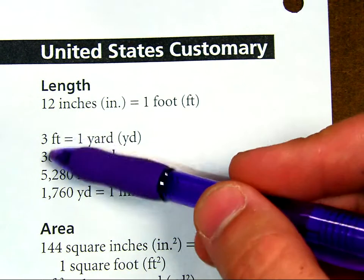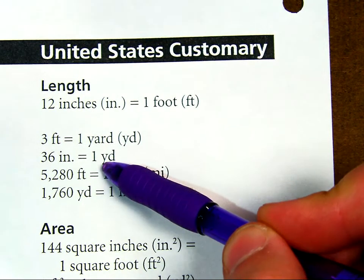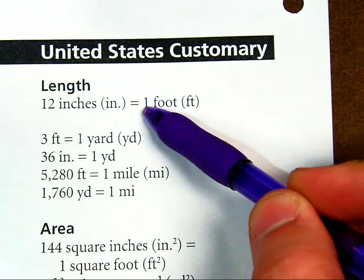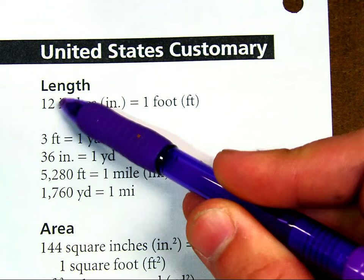That makes sense. For every 3 feet, there's 1 yard. So in every 1 yard, there's 3 feet. In every foot, there's 12 inches. 3 times 12 is 36.